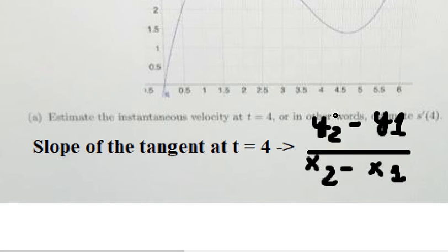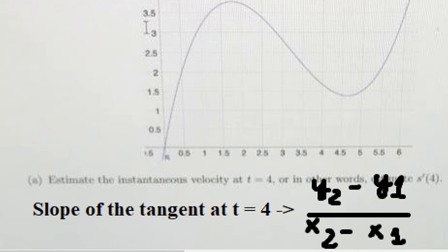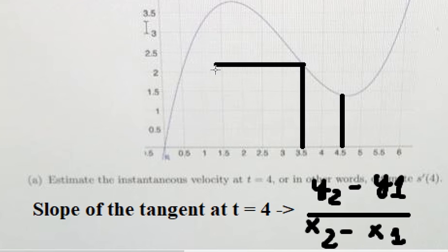If we want to find y1, y2, x2, x1, I will select two points next to 4. That is about 3.5 and 4.5. So from 3.5 here to 4.5 here.